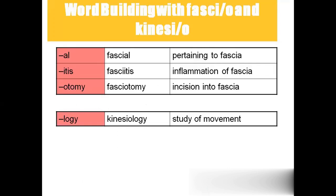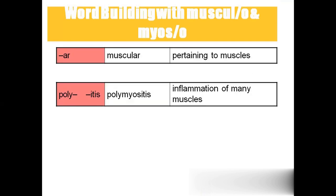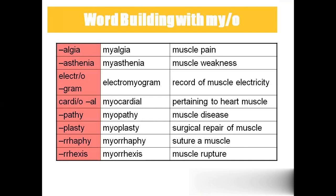Coming to the word building part: fascial means fascia. Fasciitis is inflammation of the fascia. Fasciotomy is incision or cut to the fascia. Kinesiology is the study of movement. Muscular means pertaining to muscles. Polymyositis is inflammation of many muscles. Myalgia means muscle pain. Myasthenia means muscle weakness. Electromyogram is recording the electrical activity of muscle. Myocardia means pertaining to the heart muscle. Myopathy is muscle disease. Myoplasty is surgical repair of the muscle. Myorrhaphy is suturing of a muscle. Myorrhexis is muscle rupture.